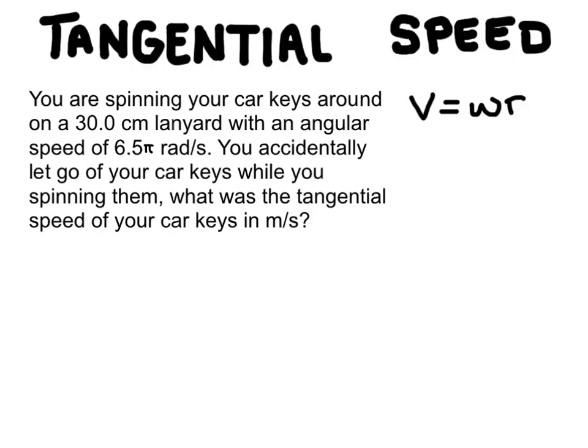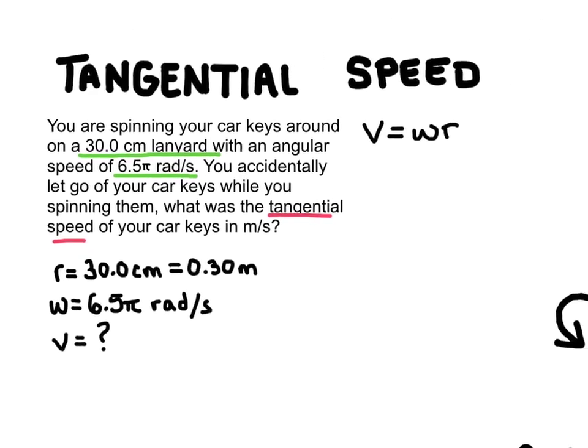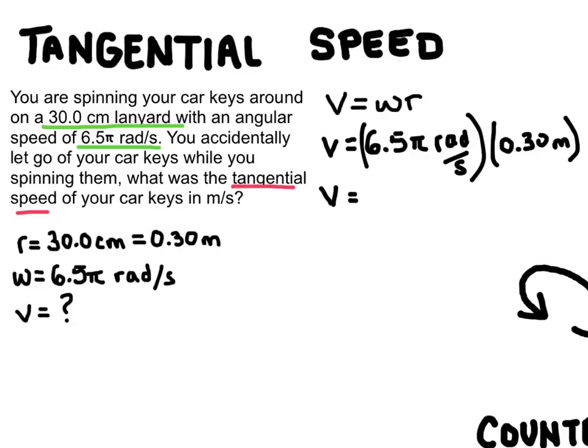Let's talk tangential speed now. Tangential speed can be calculated by multiplying the angular speed by the radius. So here's an example of a problem. You're spinning your car keys around on a 30 centimeter lanyard with an angular speed of 6.5 pi radians per second. You actually let go of your keys and we want to calculate the tangential speed of the car keys as they fly through the air in a straight line. So let's start by listing the data that we know. So I've converted radius here into SI units of meters. And now we can go ahead and plug this information into our equation. And the tangential speed will be 6.13 meters per second.